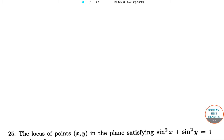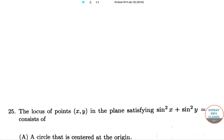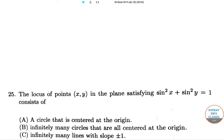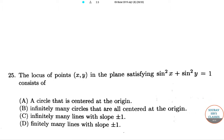Now it is question number 25. The locus of points (x, y) in the plane satisfying sin²x + sin²y = 1 consists of: option A, a circle centered at the origin; option B, infinitely many circles all centered at the origin; option C, infinitely many lines with slope ±1; and option D, finitely many lines with slope ±1.